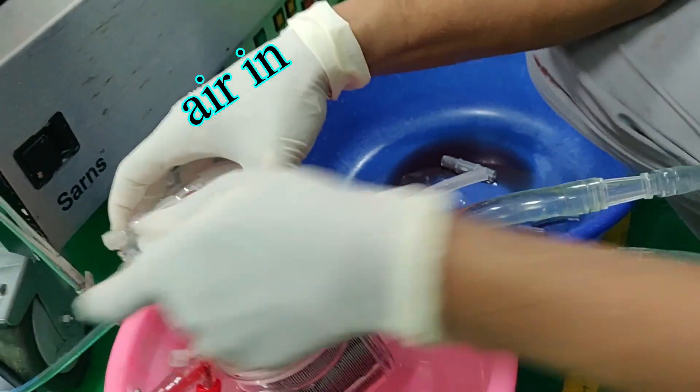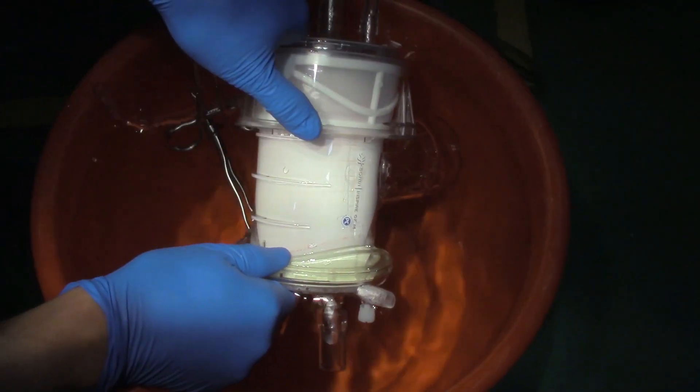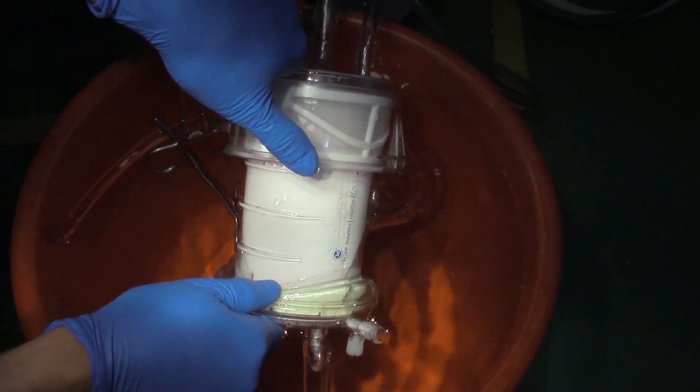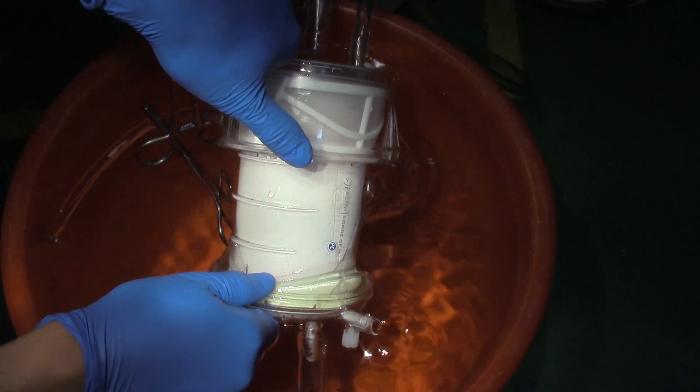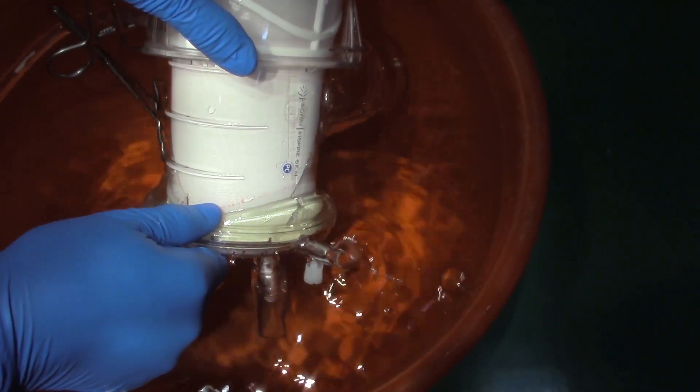So we tried to apply the same mechanism or technique to another oxygenator of another make and found that there was air escaping from the oxygenator when the air outlet or air exit was blocked by a clamp.